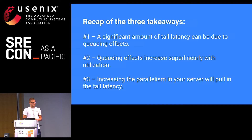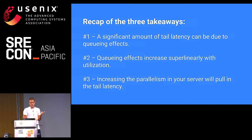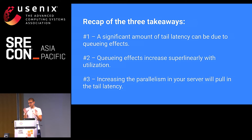A recap of the three takeaways: First, a significant amount of tail latency can be due to queuing effects — if you haven't measured it, you probably don't know how bad it is, so go measure it, it's fairly easy. Second, queuing effects increase super-linearly with utilization, so as you crank up utilization, the first time it's easy, but each subsequent increase becomes harder and harder. Third, increasing the parallelism in your server will pull in the tail latency, but you need proper software engineering to make sure it actually works out well.